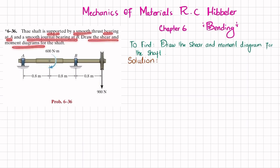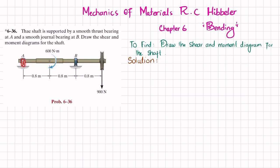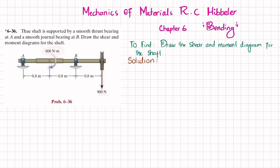Draw the shear and moment diagram for the shaft. You can see this is the shaft where there is a smooth thrust bearing at A and smooth journal bearing at B. At one point we have a load of 900 Newton and at another point we have a moment of 600 Newton-meter that is clockwise. So you have to draw the shear and moment diagram for the shaft.